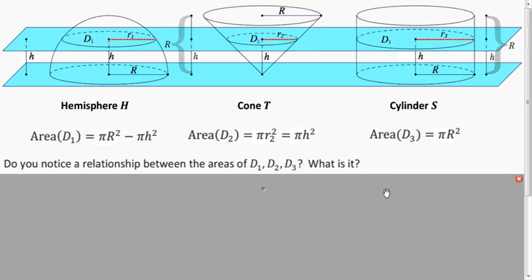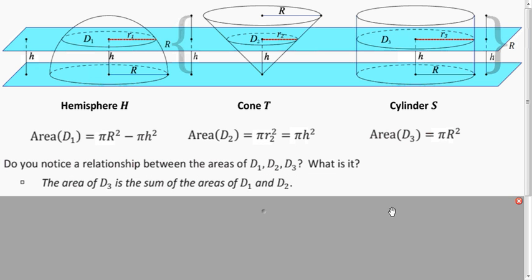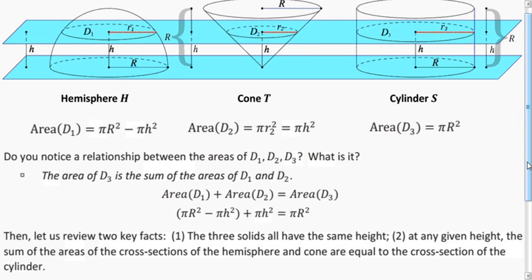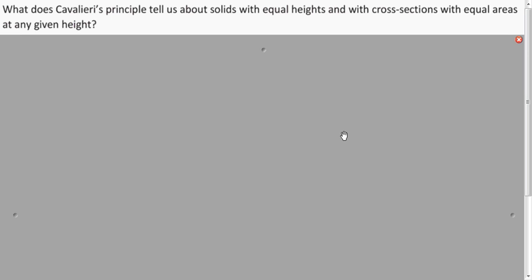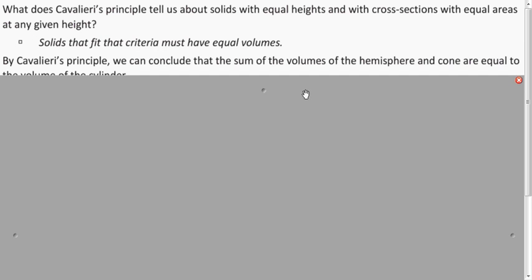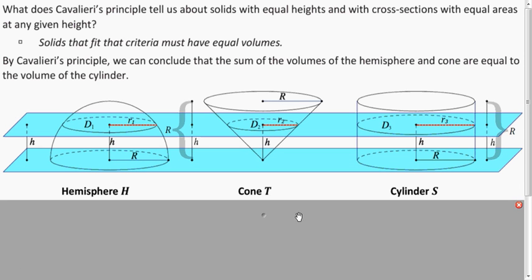So what's the relationship between these three quantities? The cylinder's cross-sectional area is what we get if we add the hemisphere's and cone's together. That's convenient because we know the volume of a cone and the volume of a cylinder. These solids have the same height, and at any height, if we add up the cross-sections of the hemisphere and cone, we get the same area as the cylinder's cross-section. By Cavalieri's Principle, those volumes are the same.